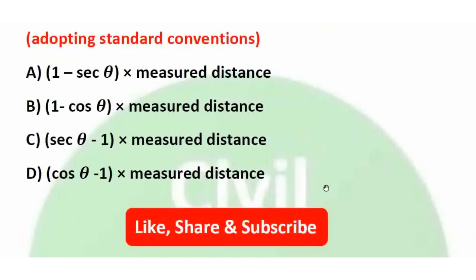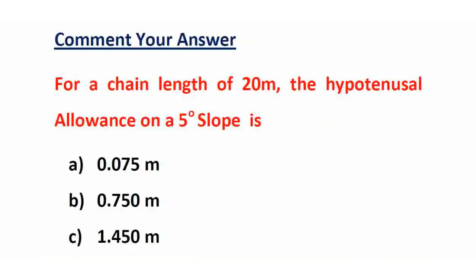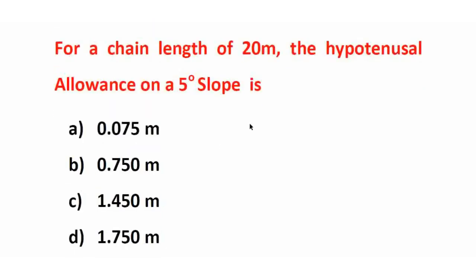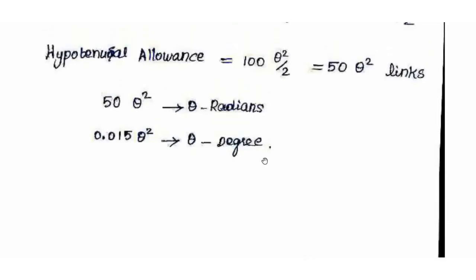The hypotenusal allowance in terms of 100 links, or in meters for a 20m or 30m chain, is (sec θ − 1) multiplied by the total measured distance. For a chain of 20 meters and a 5-degree slope, we calculate the hypotenusal allowance using the formula: 50 θ² in terms of links.